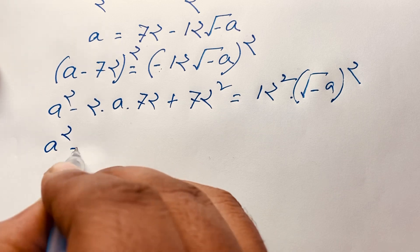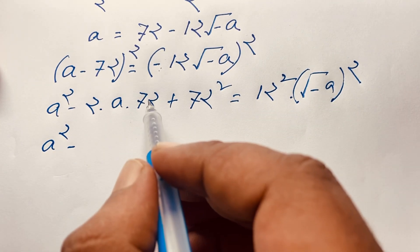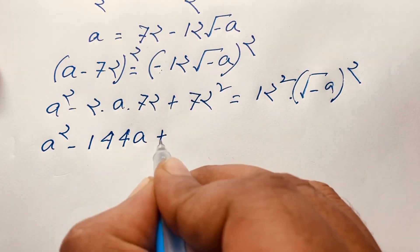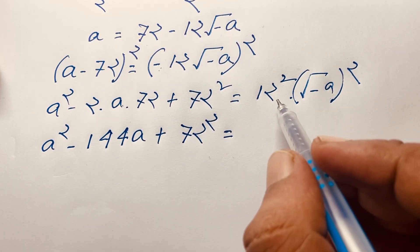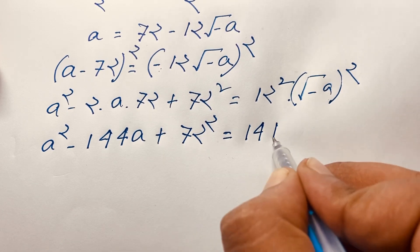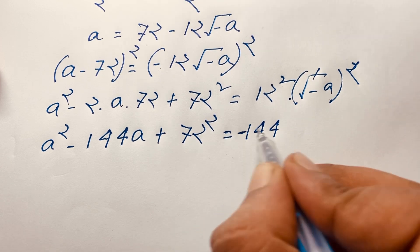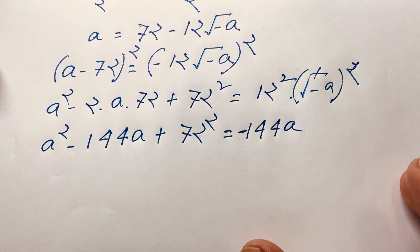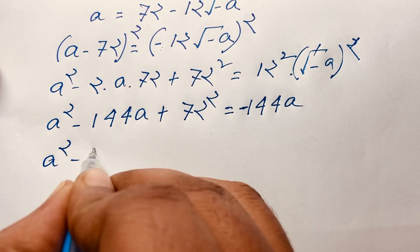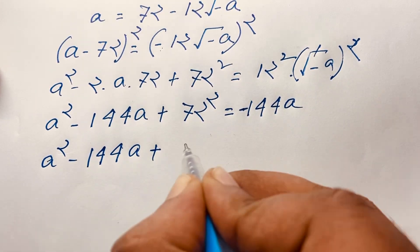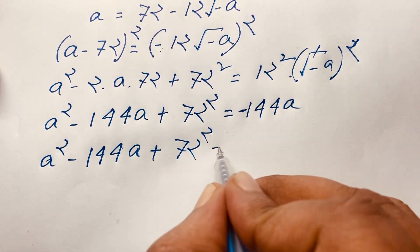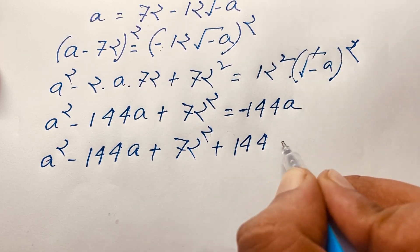A squared minus 2 times 72, which is 144, times A, plus 72 squared equals — the exponent 2 and 12 squared is 144, and the square root cancels — giving negative 144A. Now if I move this value to this side, it will be A squared minus 144A plus 72 squared, and moving the negative value gives plus 144A equals 0.